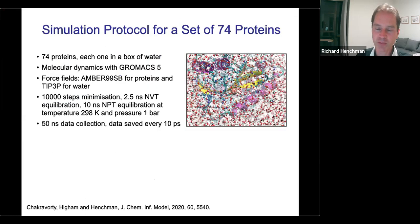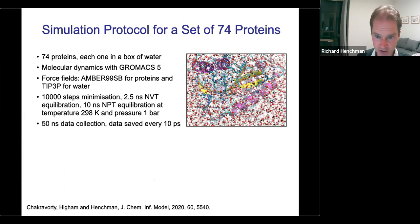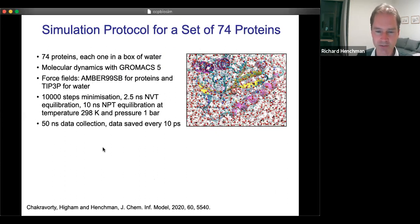The conformational term uses the same flexible adaptive dihedral approach as before. We're looking at a set of 74 proteins, each in a box of water, using the GROMACS software, AMBER99sb force field, TIP3P water, standard equilibration, and then 15 nanoseconds of data collection.